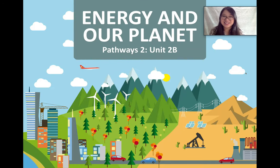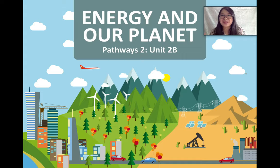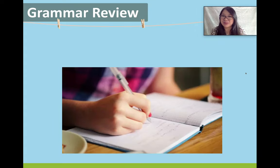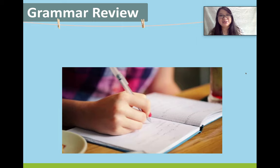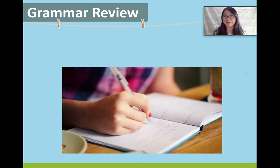Now we can begin our textbook lesson. Today we will finish Unit 2 — energy and our planet. Last week, we learned a grammar point: simple present and present continuous tense. You might remember that we use the simple present to talk about routines, facts, and things that are always true. And we use the present continuous to talk about things that are happening right now or around right now. We also sometimes use the present continuous to talk about future plans.